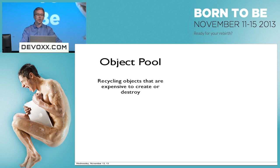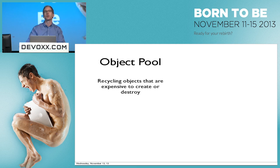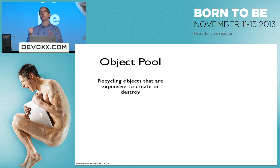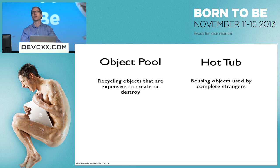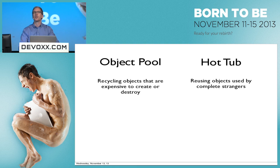We have the object pool. It's about recycling objects that are expensive to destroy — you just create a pool of these objects; when they go away, you put them in the pool; you retrieve them when you need a new one. Compared to that we have the hot tub pattern, which is about reusing objects that were used by complete strangers and left in a dirty and unhygienic state.